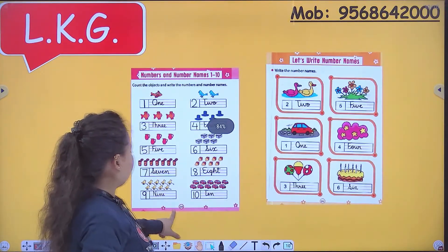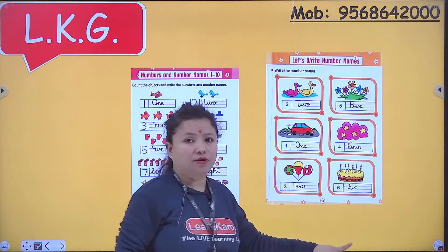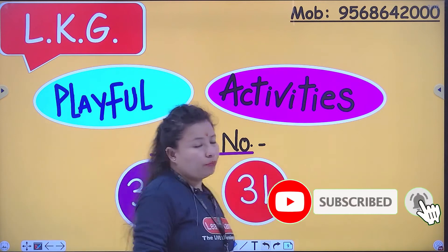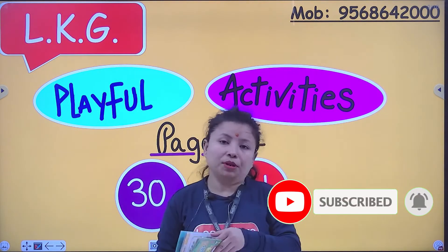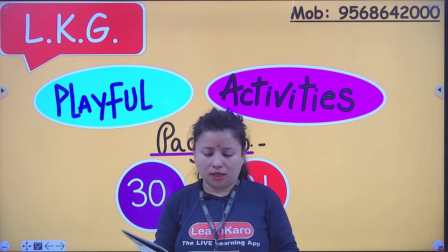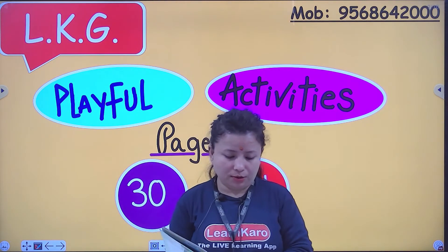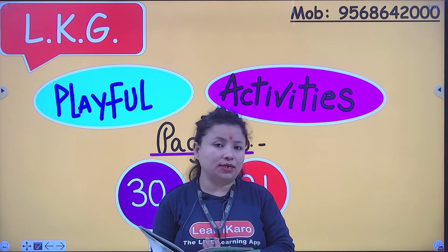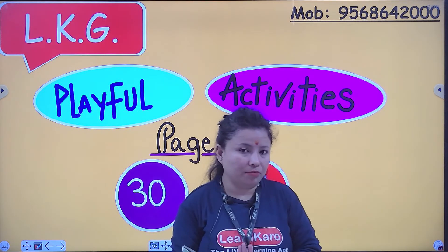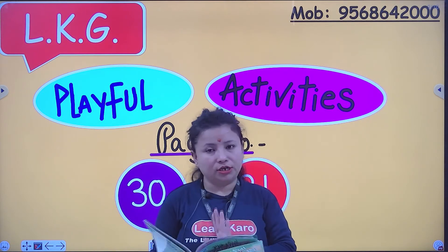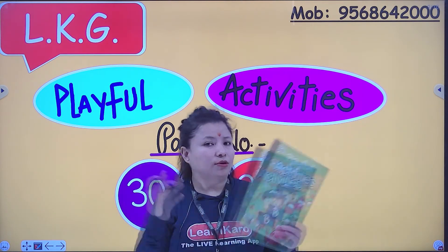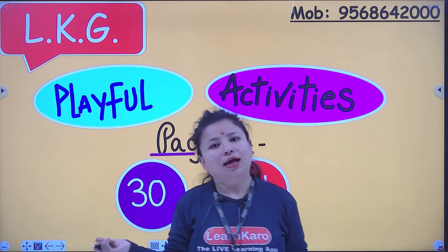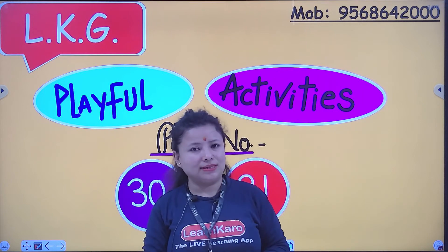Now you have to complete page number 30 and 31 only in your book. Aapko page number 30 aur 31 apni book mein complete karna hai. And you know very well about the number names — one, two, three, four, five, six, seven, eight, nine, ten. Okay. Now ma'am will be sending the assignment related to these numbers. You have to complete that work. Thank you for watching, and keep watching. Goodbye! Bye. Have a nice day.